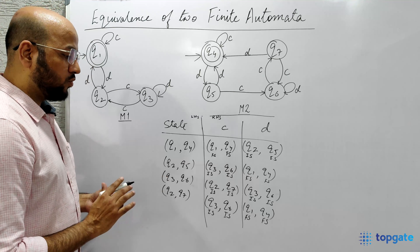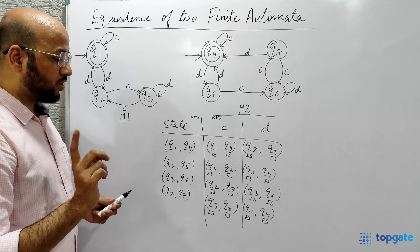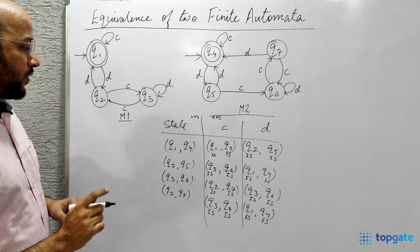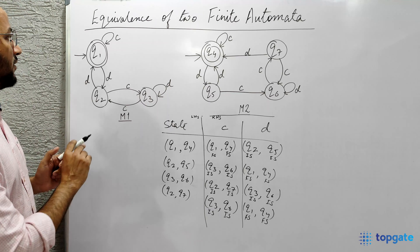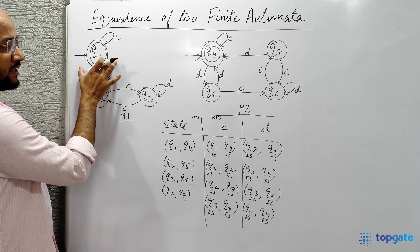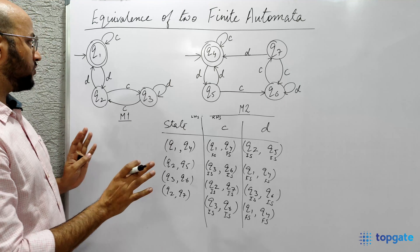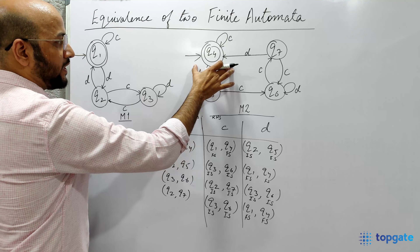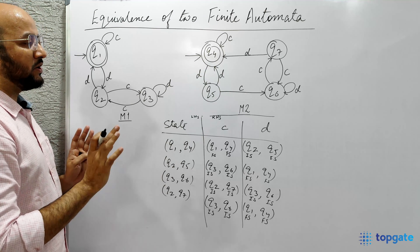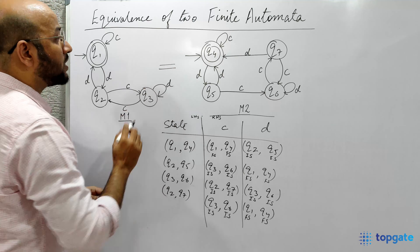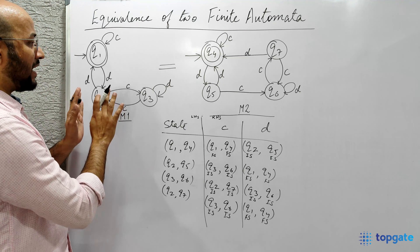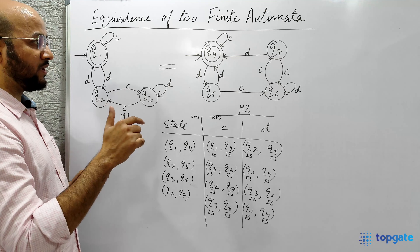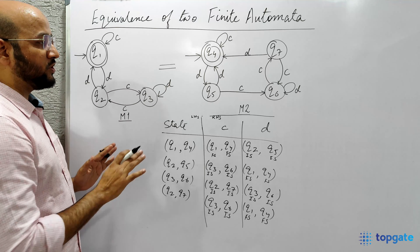We have not reached any pair where one element is a final state and the other is a non-final state. Therefore we can say both machines satisfy step 1. For step 2, in M1 Q1 is both the initial and final state, and in M2 Q4 is also both the initial and final state. Both conditions are satisfied, so we conclude that both machines are equivalent — even though they look different, with M1 having three states and M2 having four states, they accept the same language.